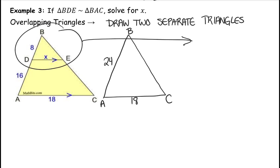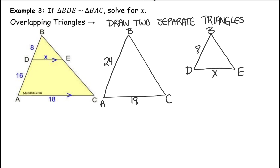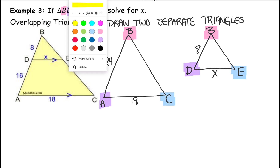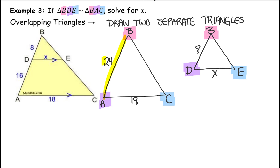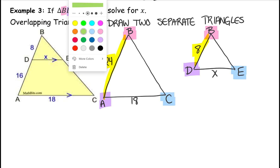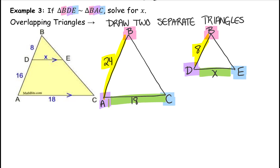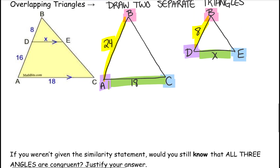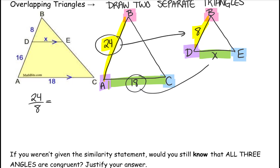Now draw the smaller triangle separately. Interpret your similarity statement to determine which angles correspond and which sides correspond. The side between the pink and purple angles corresponds to the side between the pink and purple. The side between purple and blue corresponds to purple and blue. The third side does correspond as well, but it doesn't have any measures so it won't be relevant when making the proportion. I like to do big over small, so: 24 over 8 is equal to 18 over X.